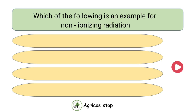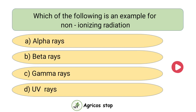Which of the following is an example of non-ionizing radiation? Options are alpha rays, beta rays, gamma rays, and UV rays. The answer is UV rays. UV rays is an example of non-ionizing radiation.